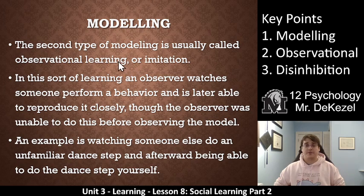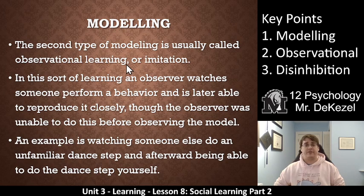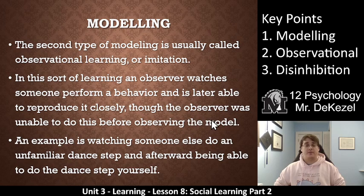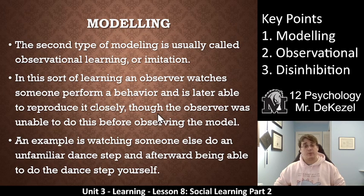The second type of modeling is called observational learning, or imitating. This is what happened in the Bobo doll experiment, where children actually watched an adult do something and then imitated it later. They didn't just do that behavior because other people were doing it at the same time — they learned that behavior through observation and imitation. The child observed the person and then picked up the Bobo doll, pushed it on the ground, sat on it, and hit it with a mallet — things the child wouldn't do otherwise.